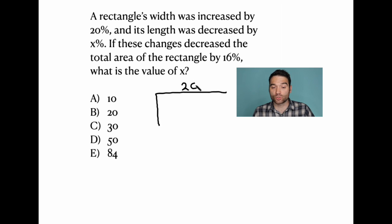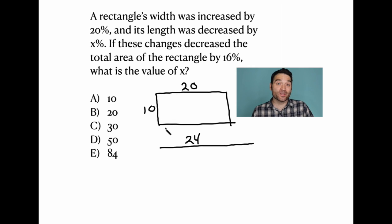So why don't we just say a rectangle that's 20 by 10. And what did I do to this rectangle? I increased its width by 20%, so a 20% increase on 20 gets us to 24. So now this rectangle is 24 inches or feet wide. And the length was decreased by some amount. I don't know, but it's shorter than it was before. So it's a 24 by unknown.